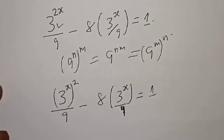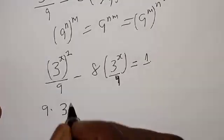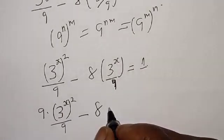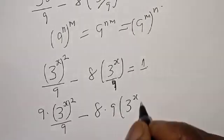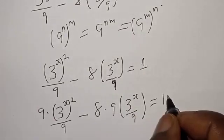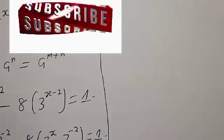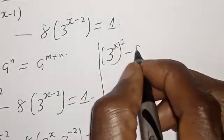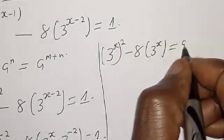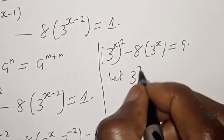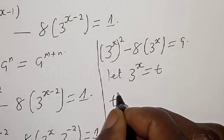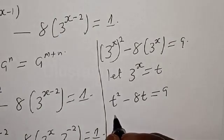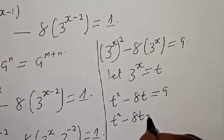Now let's multiply all through by 9. The 9s cancel, giving us: 3 raised to the power x, all squared, minus 8 into 3 raised to the power x, equal to 9. Now let 3 raised to the power x equal t. Then we have t squared minus 8t equal to 9, so t squared minus 8t minus 9 equal to 0.